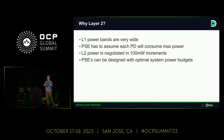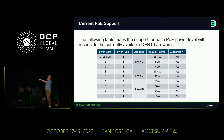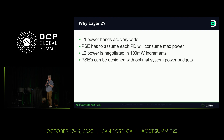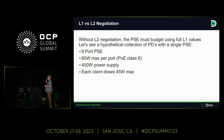The reason L2 negotiation is important for us is that we're doing cost-reduced devices where we want as small a power supply as possible. Looking at the power class table, there's a big difference between Class 5 and Class 6 — you go from 45 up to 60 watts, a 15-watt difference. When you do L2 power negotiation, you can get down to 100-milliwatt increments instead of those 15-watt steps, allowing us to design devices with the smallest power supplies we can get away with.